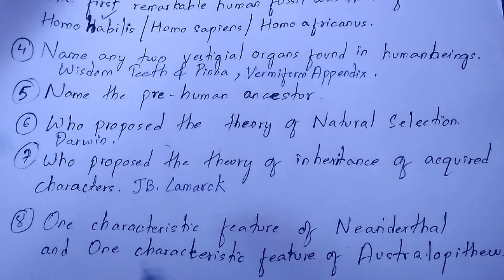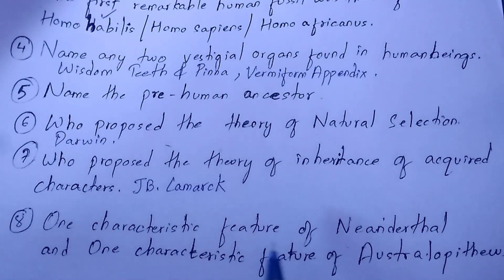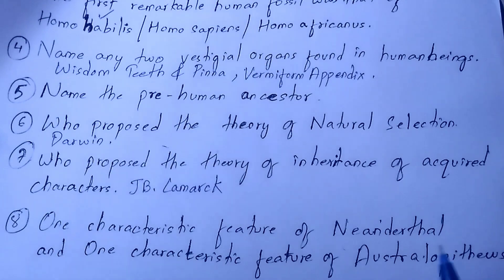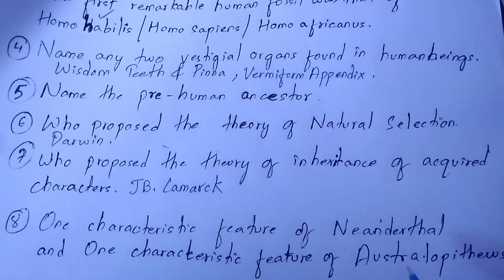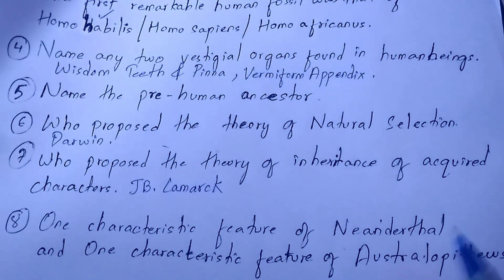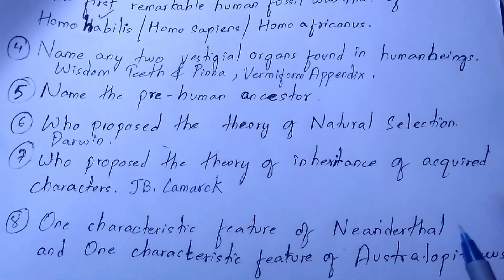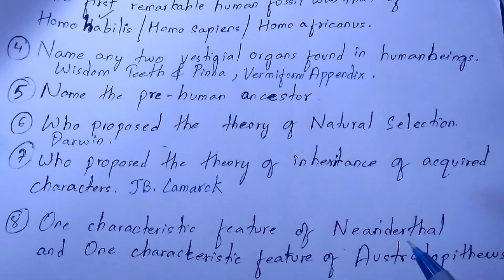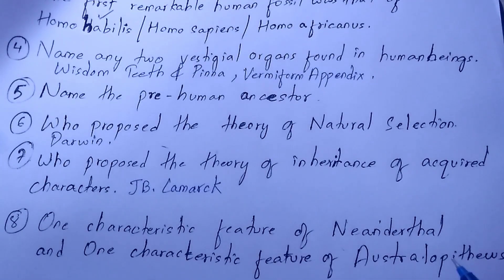The last question: give one characteristic feature of Neanderthals and one characteristic feature of Australopithecus. One characteristic feature of Neanderthals is that they walk upright with bipedal movement. One characteristic feature of Australopithecus is that its members are a combination of human-like and ape-like traits. Note these down. If you want the PDF, get it from the description box. Thanks for watching — write any doubts in the comment section, and don't forget to answer question number five.